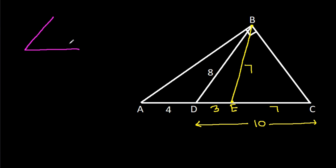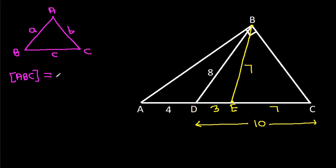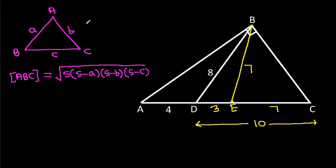Now, in any triangle ABC, if AB is a, AC is b, and BC is c, then the area of ABC is equal to the square root of S times (S minus a) times (S minus b) times (S minus c), where S is equal to (a plus b plus c) by 2.